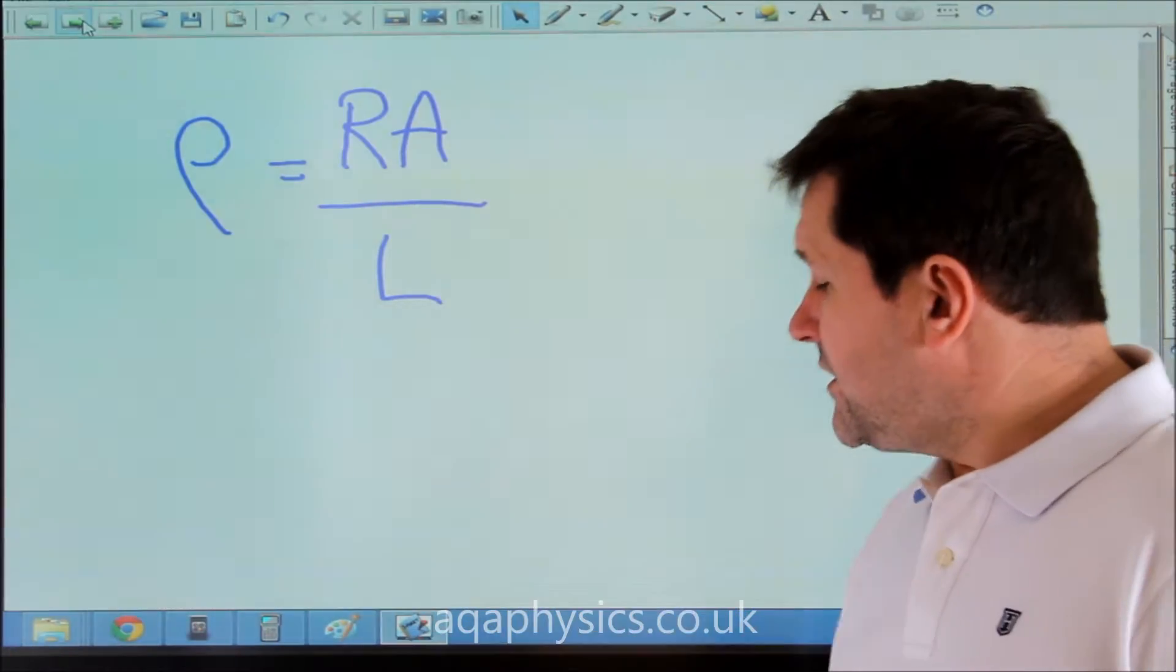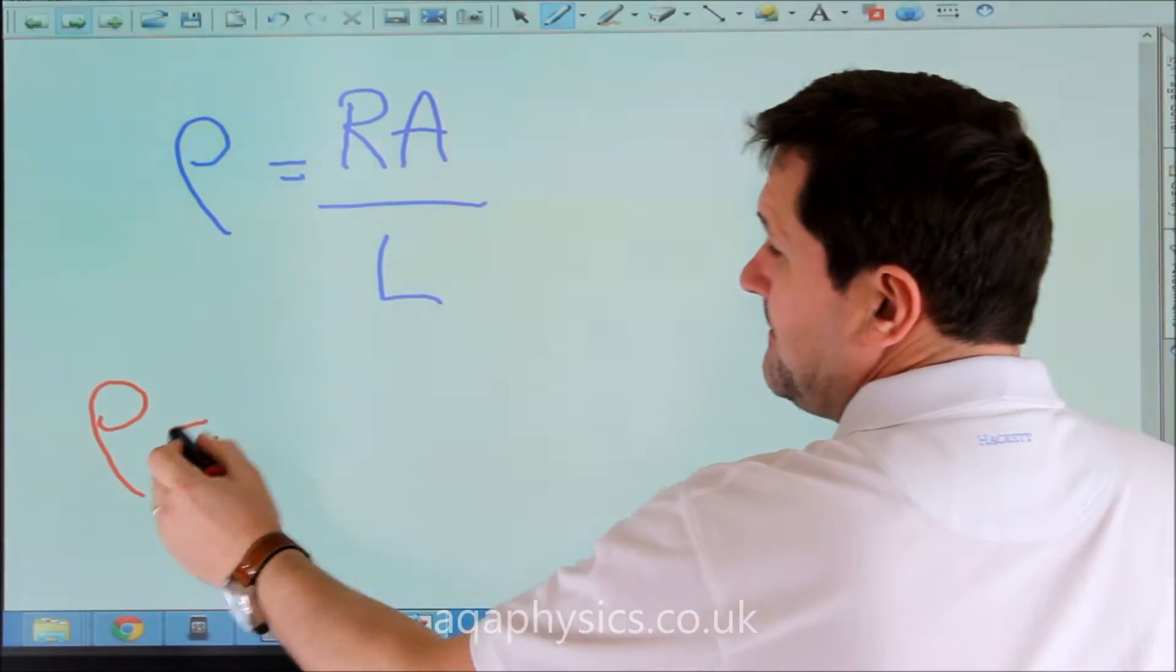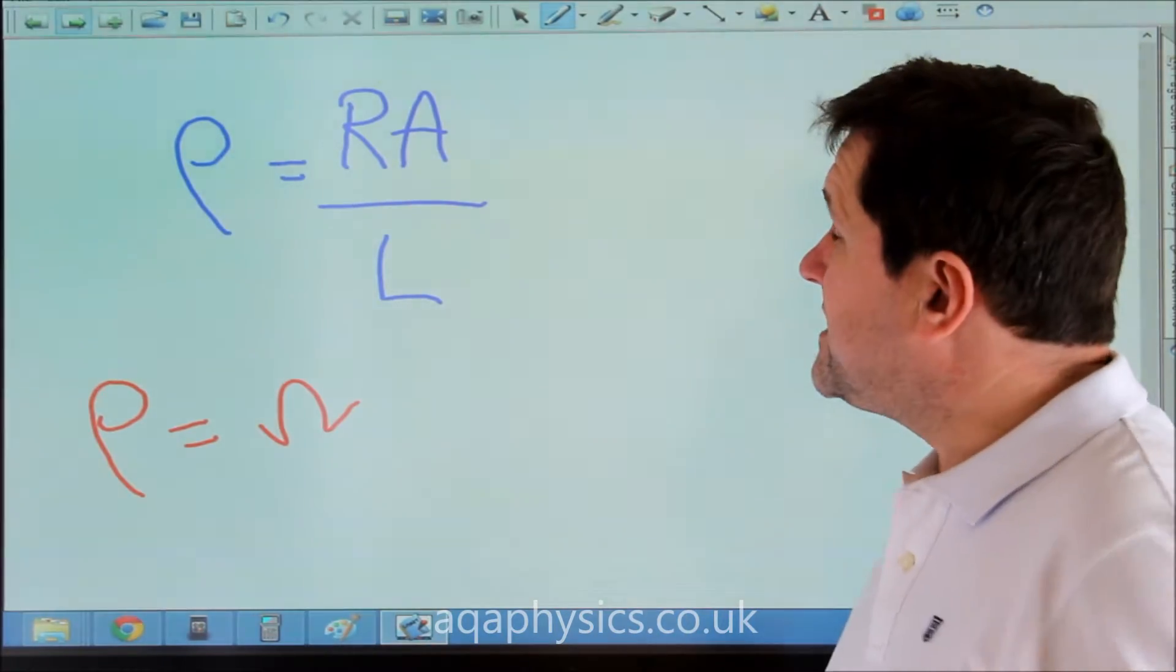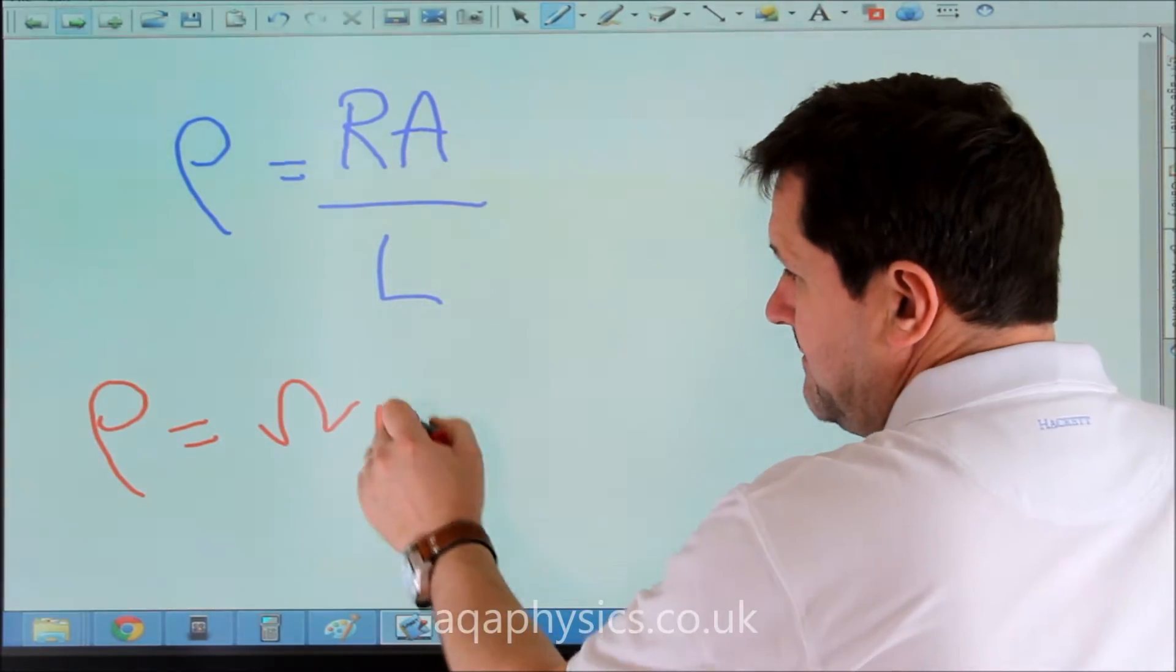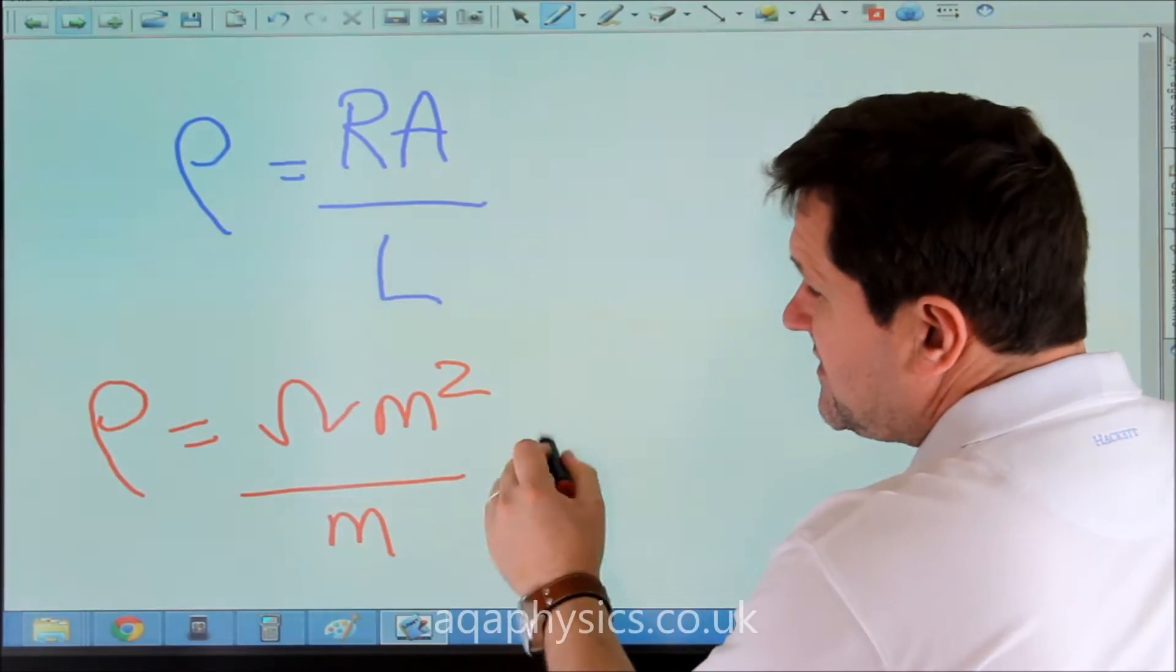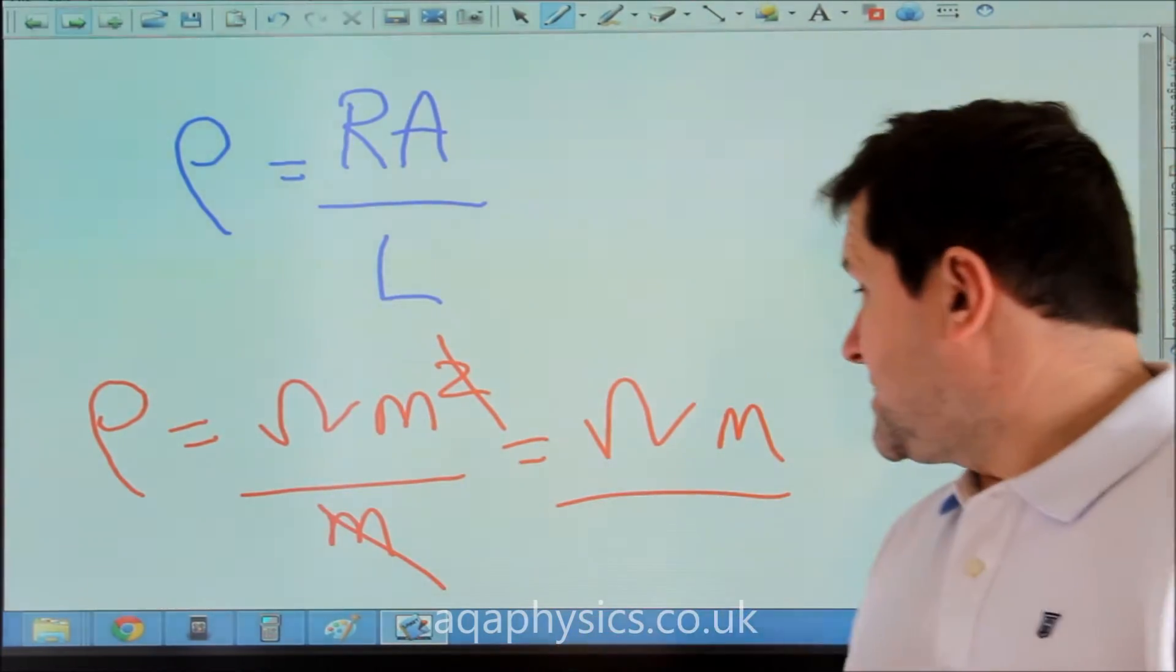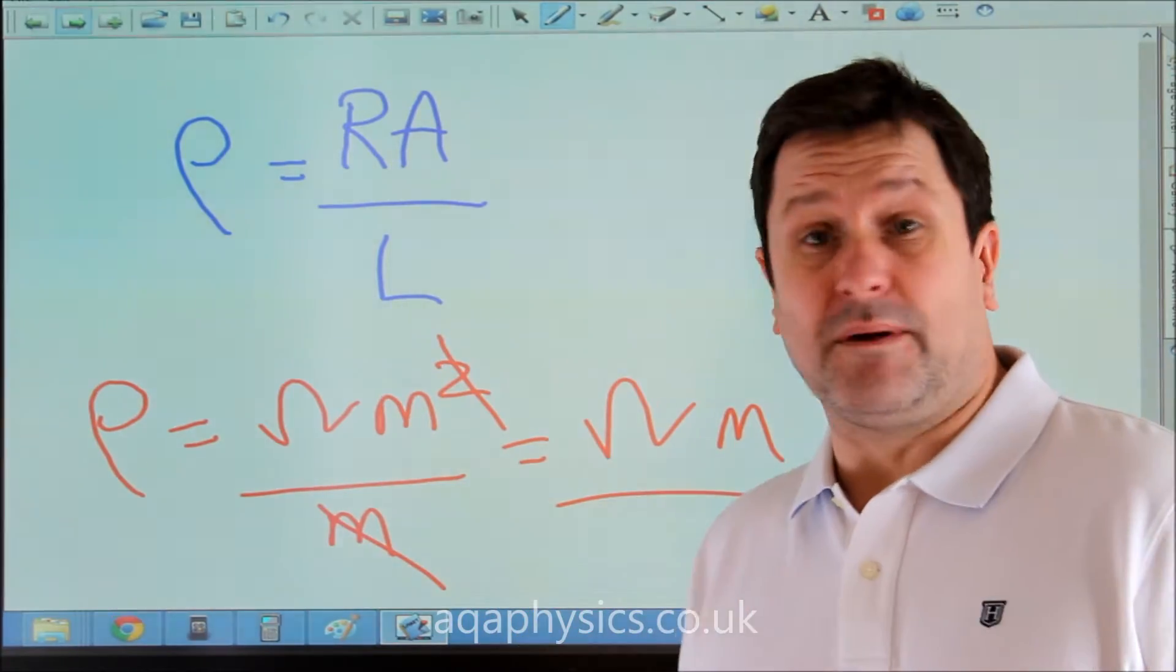The units of resistivity are straightforward. We can see that Rho is R, which is ohms, times area. Cross-sectional area of a wire is measured in meters squared. Area is meters squared, so it's meters squared divided by length. Length is in meters, so the units of resistivity are ohm meters. Now we know our units for resistivity, which are ohm meters, we need to think about this in a typical problem.